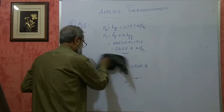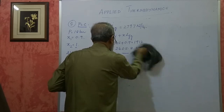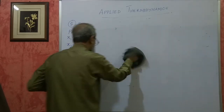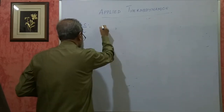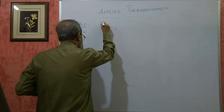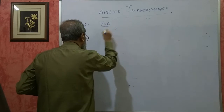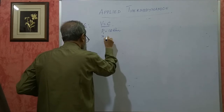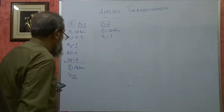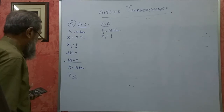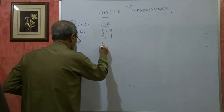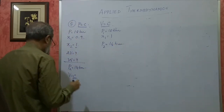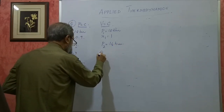Next is the constant volume process. P1 = 18 bar, x1 = 1 — steam is dry saturated. Now P2 is given as 14 bar. We have to find the quantity of heat to be extracted.